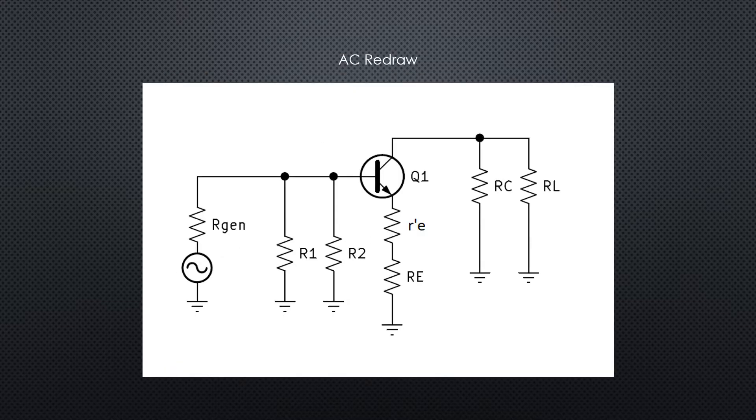Here's the AC redraw. You can see the DC power supply is acting like an AC ground. The coupling caps are acting like shorts and now we've included R prime E, the AC resistance for the transistor.